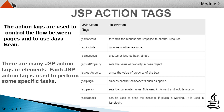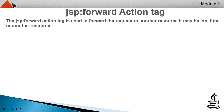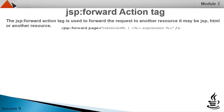Now let's see the JSP forward tag. The JSP forward action tag is used to forward the request to another resource — it may be JSP, HTML, or another resource. This tag will redirect your page to the next page. You can add parameters as well. Let's understand it with an example.